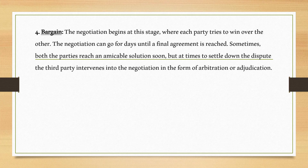The fourth step is bargain. Negotiation begins at this stage where each party tries to win over the other. Negotiation can go on for days until a final agreement is reached. Sometimes both parties reach an amicable solution quickly, but at times, to settle the dispute, a third party intervenes in the form of arbitration or adjudication.